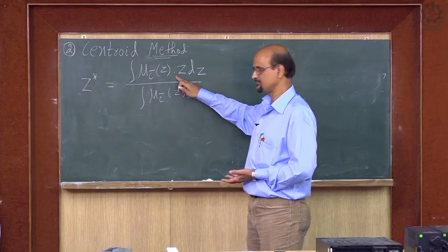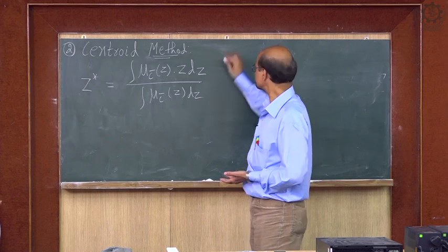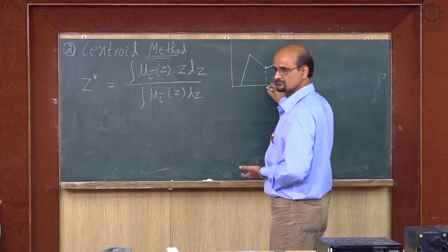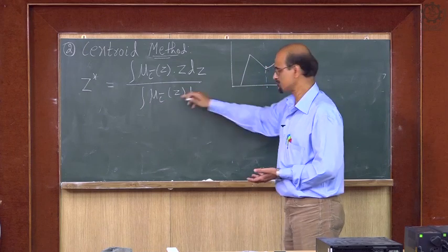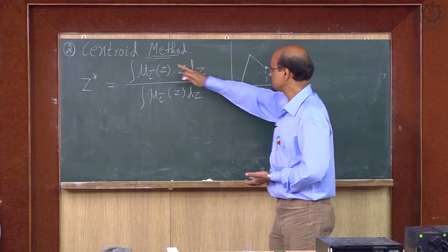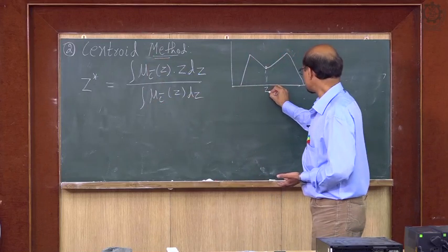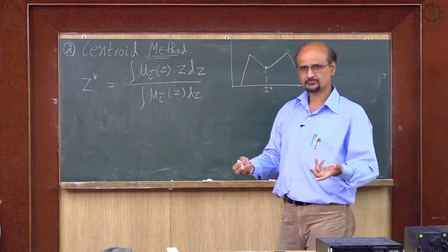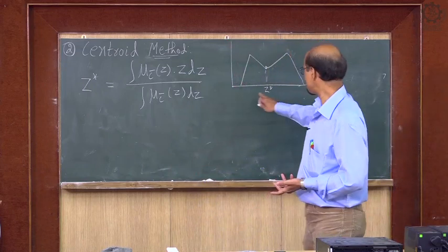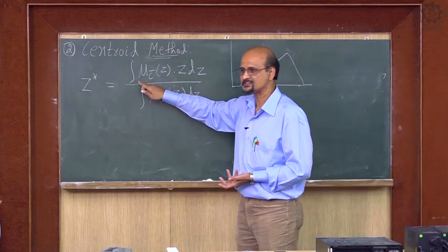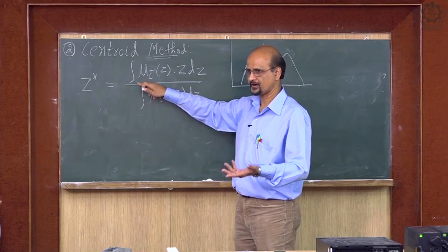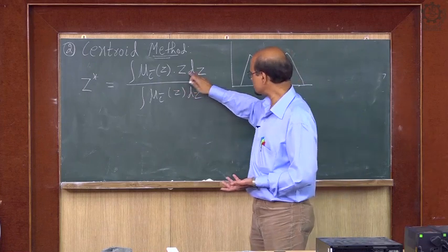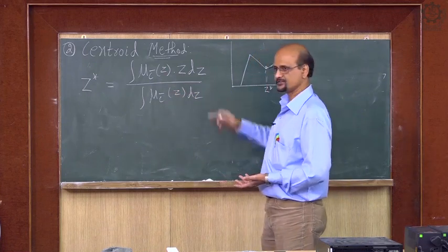The formula is: ∫ μ_c̄(z) · z dz divided by ∫ μ_c̄(z) dz. Suppose I have this type of output — the center may be here, it depends. This method is used practically. We want a single value from the output fuzzy set for our action, and this integration is your algebraic integration over the whole area.